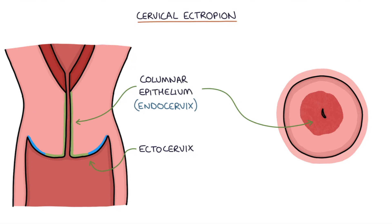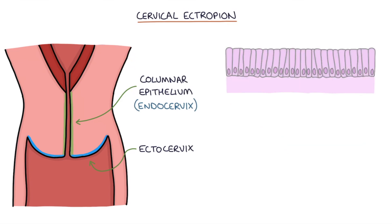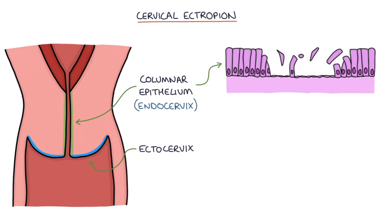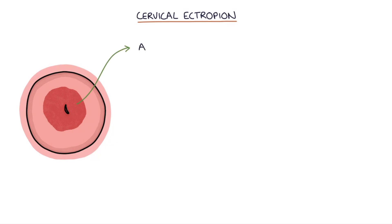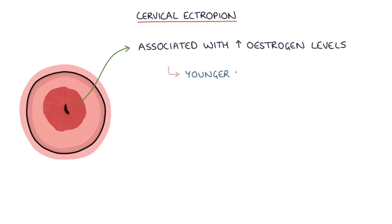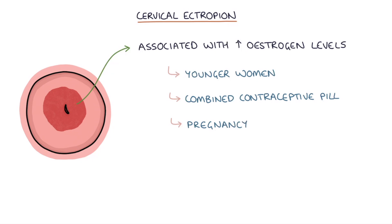This lining has a slightly different appearance to the normal ectocervix. The cells of the endocervix, which are columnar epithelial cells, are more fragile and prone to trauma. They're more likely to bleed with sexual intercourse, meaning cervical ectropion often presents with post-coital bleeding. Cervical ectropion is associated with higher estrogen levels and is therefore more common in younger women and women on the combined contraceptive pill, and also during pregnancy when there are higher circulating estrogen levels.